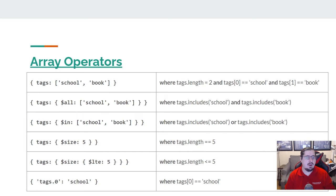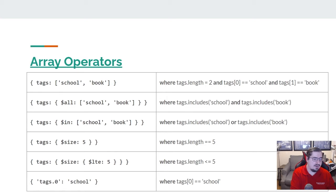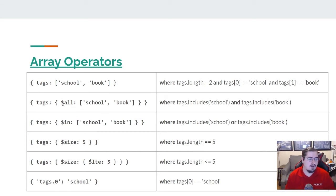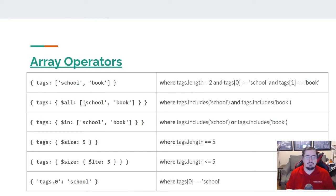Other options you have: one is the $all operator, which says that everything in the array you provide must be in the document you're looking at. If I write it this way, I'm saying the tags must contain 'school' and must contain 'book' — it can have additional tags beyond that, and they can be in any order. But it has to have both of those tags.